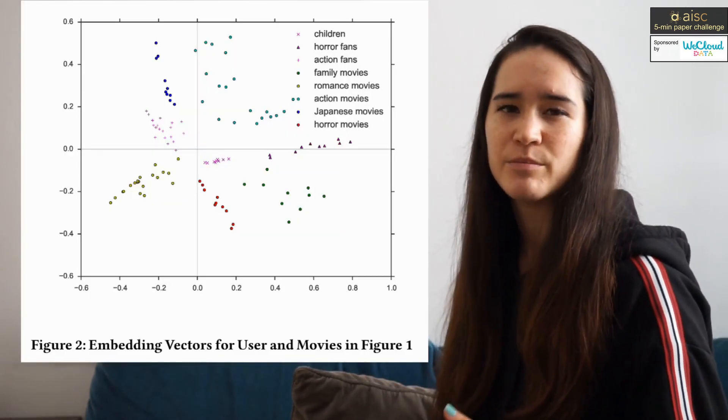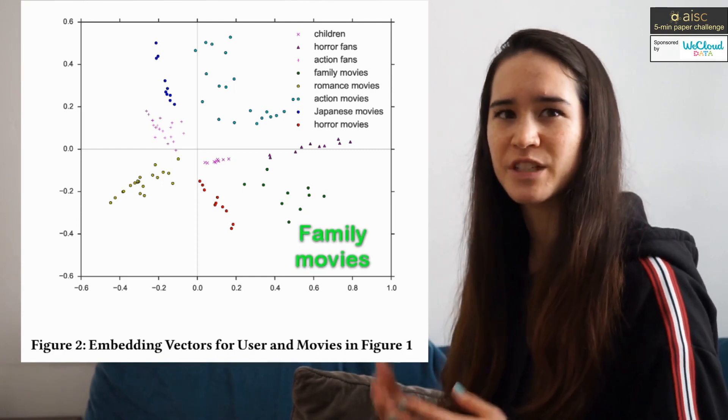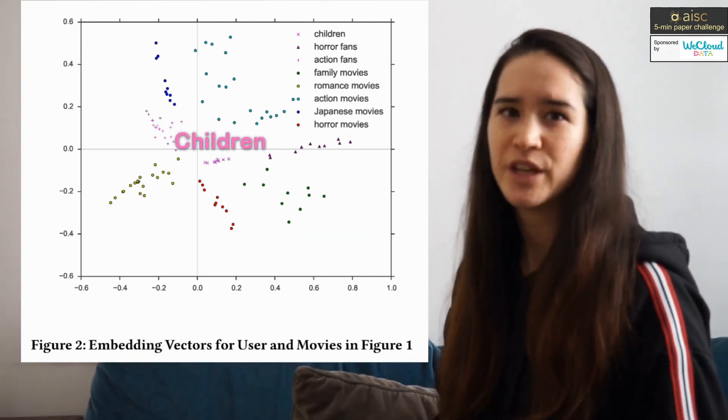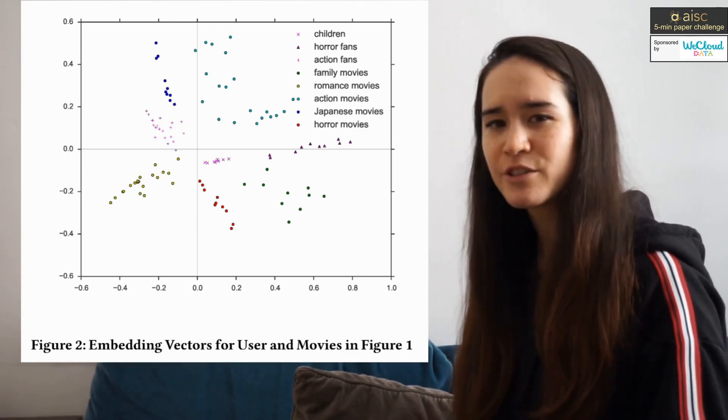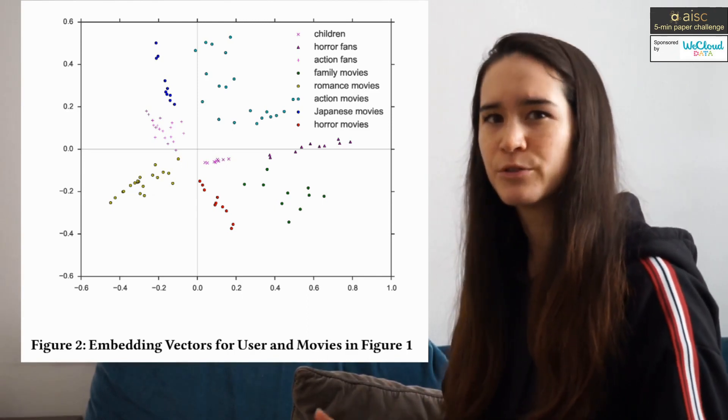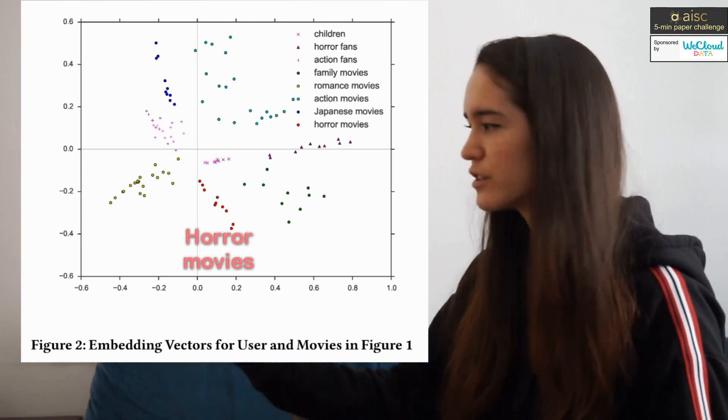For example, a recommender system may embed 2D vectors for family movies fairly close to vectors for children, which is good. Children have watched nothing but family movies. But the recommender system may also embed or fold vectors for horror films close to these children.